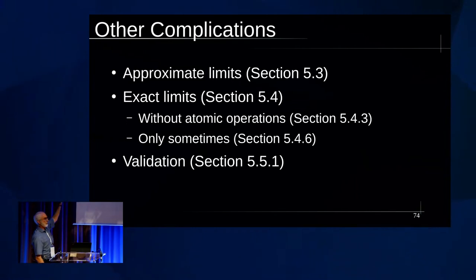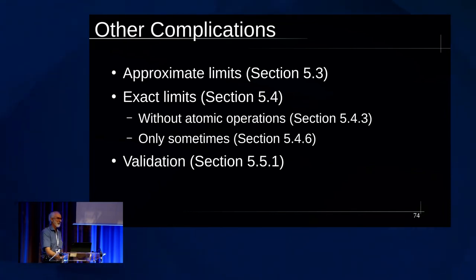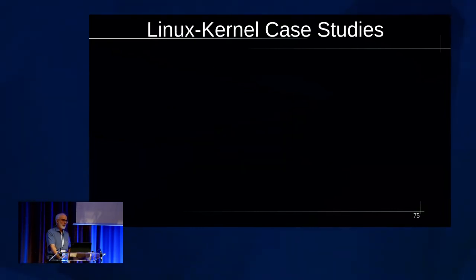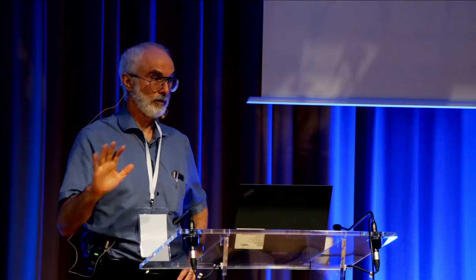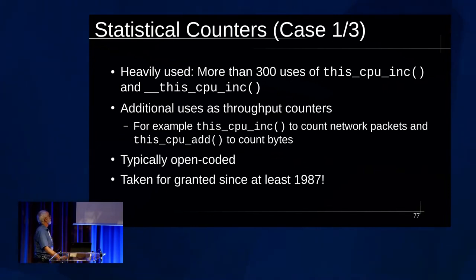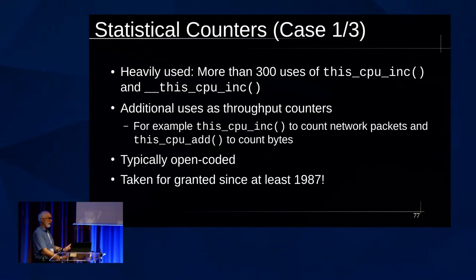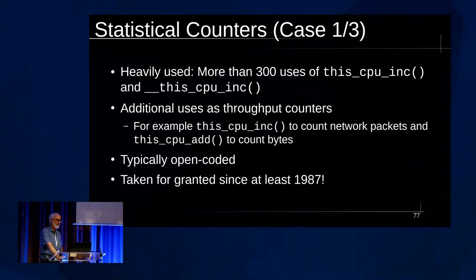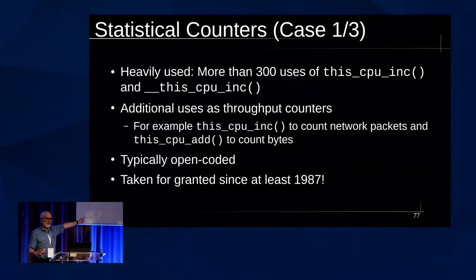Let's take a look very quickly at some case studies of counting in the Linux kernel. Statistical counters are the first one — this is used all over the place. this_cpu_inc is the workhorse and there are more than 300 uses of it. For networks, they use this_cpu_inc to count packets and this_cpu_add to count bytes. The cpu_add takes a number; it's normally open-coded, there aren't abstractions for it. I have a textbook published in 1987 that says as an aside it was obvious and everybody knew it — this is how you do statistics. This has been known for a very long time; I don't know who invented it, but it may have been invented in the '60s or even the '50s.